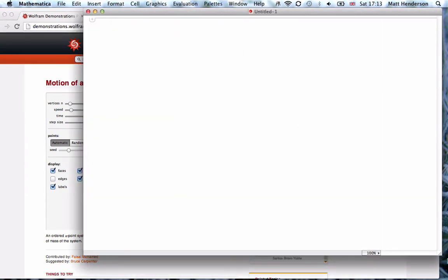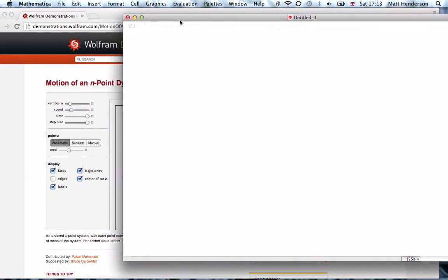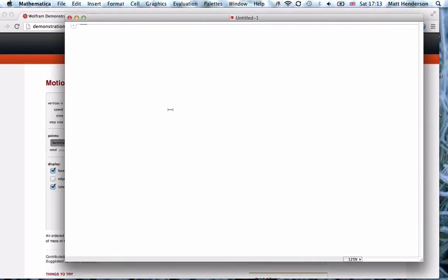New Mathematica notebook here. I think we want to start by generating some random points P, between minus one and one, and we'll have n of them. They're two dimensional.